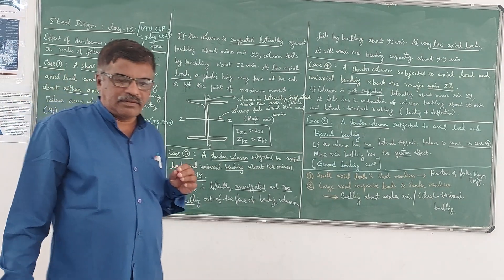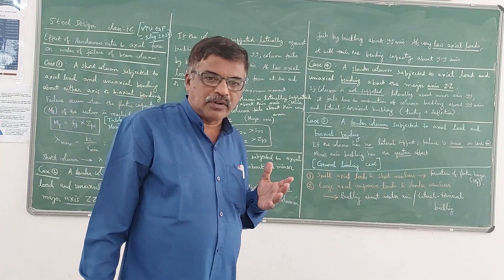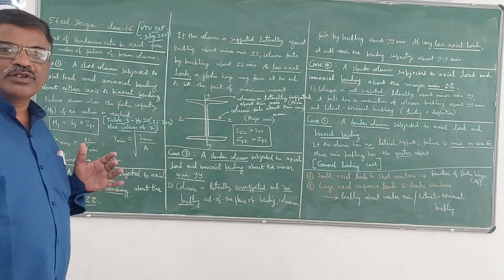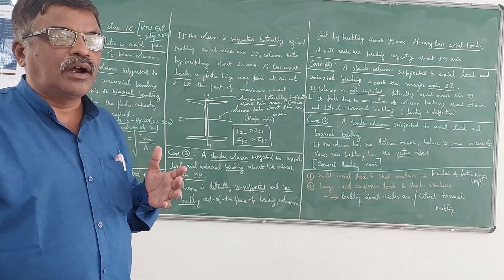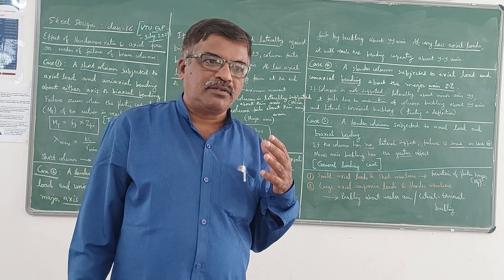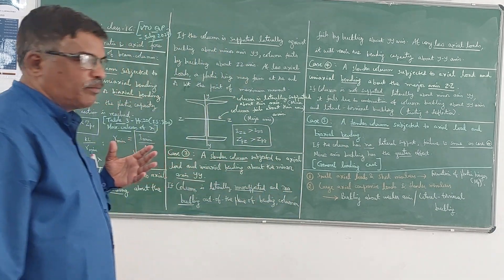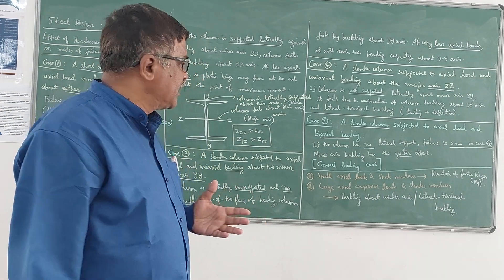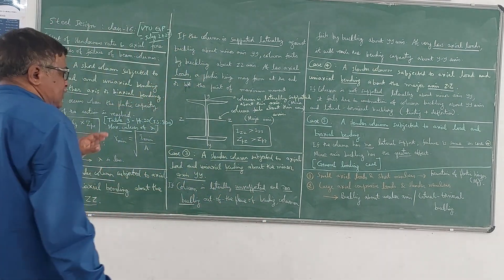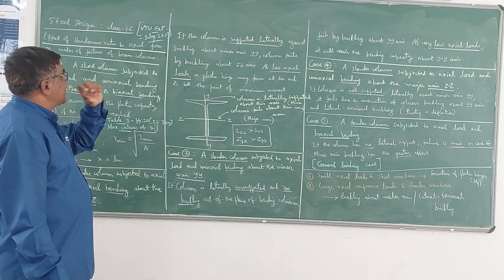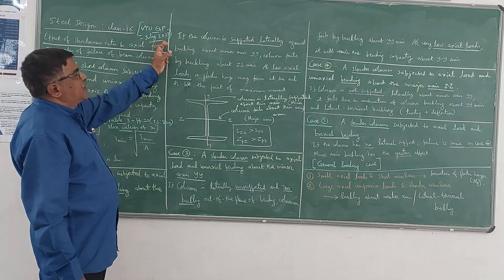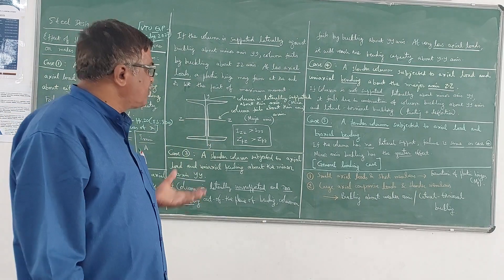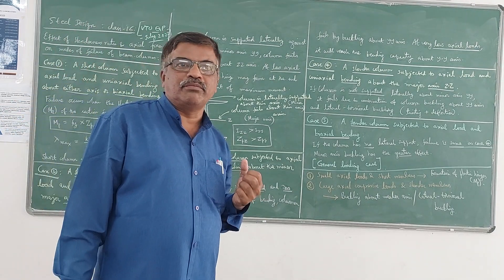In this class, we will discuss how a beam column fails, the modes of failure of beam columns, and how the effect of slenderness ratio and magnitude of axial load govern the failure criteria in a beam column. This is a theory question asked before July 2022. There are five different cases of modes of failure in beam columns.